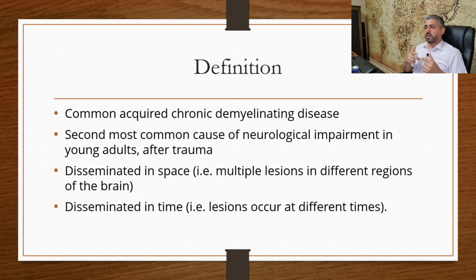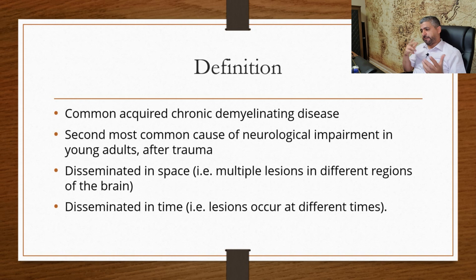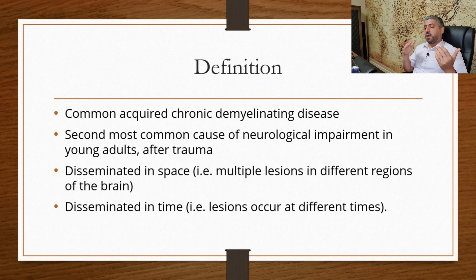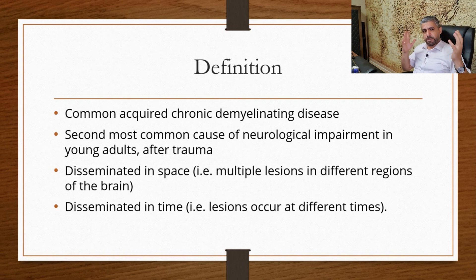Disseminated in space means there are multiple lesions in different parts of the brain, and disseminated in time means the lesions occur at different times. So: multiple lesions, different parts, different times. These are the two main criteria to diagnose multiple sclerosis.